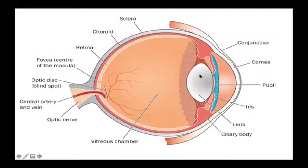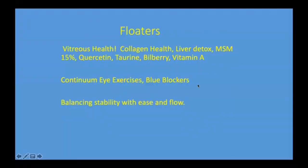We've got the cornea, we've got the lens. The lens should look white, and when we develop cataracts, there's metabolic waste that starts to accumulate here because there's no blood vessels that actually create nutrients here at the lens.